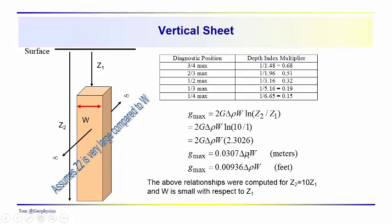We can come up with abbreviated expressions when we're mixing units, as we did before, in this case, for meters and feet. And we have, in this case, these multipliers have been calculated, assuming that z2 is ten times z1. And that w, the width is small with respect to z1, and small with respect to the length, which we're pretty much assuming is infinite. There's not really a length term in here.